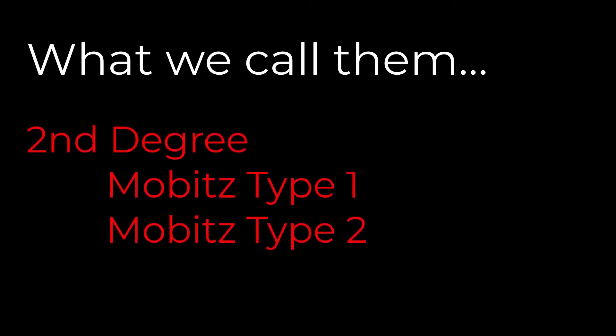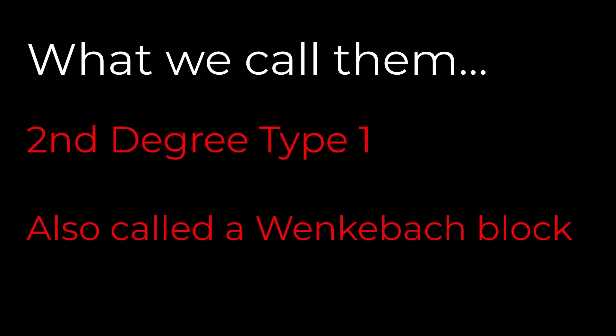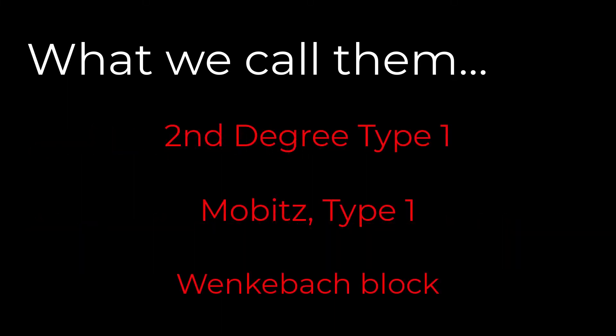One point about labeling these blocks — second-degree blocks were apparently first identified by Dr. Mobitz, which is why they often get a label of Mobitz type 1 or Mobitz type 2. If you leave Mobitz off and simply call it a second-degree type 1 or second-degree type 2, we're talking about the exact same thing. Somewhere along the line, Dr. Wenckebach was credited with identifying the second-degree type 1 specifically, which is why it's often called a Wenckebach block. A Wenckebach block, a second-degree type 1, and a Mobitz type 1 are all the exact same rhythm.